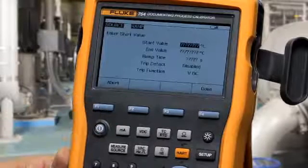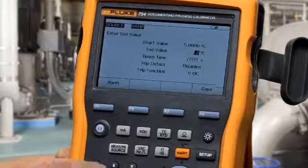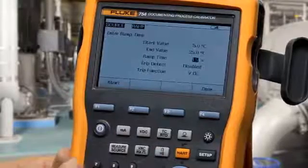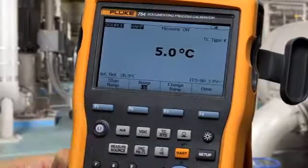Type in your starting value for the ramp, your ending temperature value for the ramp, and the amount of time that you want the ramp to take, say 15 seconds. Then press start ramp, and the temperature will ramp from the output into the indicator for your test.